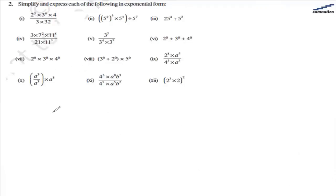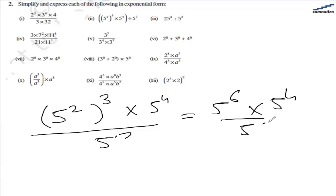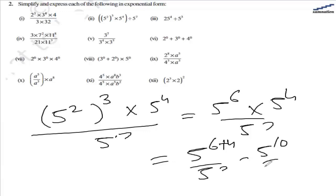In the second part, we are given 5 raised to the power of 2, this whole raised to the power of 3, multiplied by 5 raised to the power of 4. This whole is getting divided by 5 raised to the power of 7. This is a power of a power, so we multiply the powers: 5 raised to the power of 2 multiplied by 3 equals 5 raised to the power of 6. Now the base is the same, so the powers get added: 6 plus 4 equals 10. Then 10 minus 7 equals 3, so the answer is 5 raised to the power of 3.